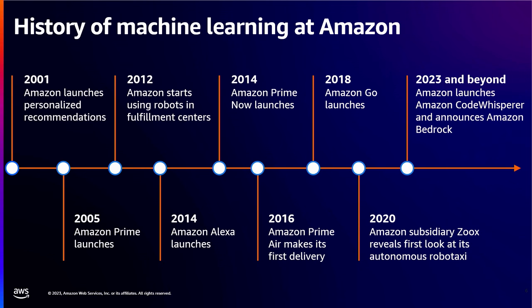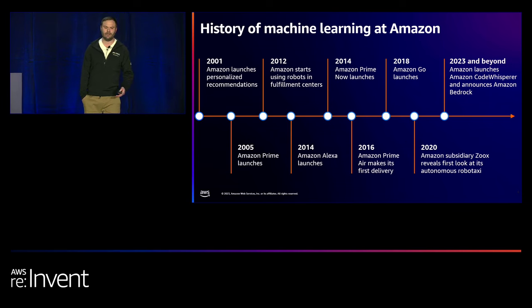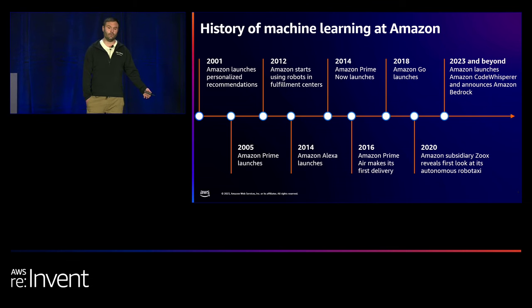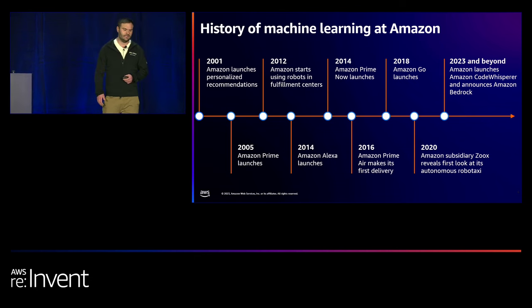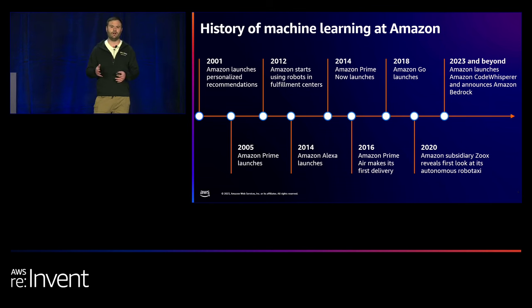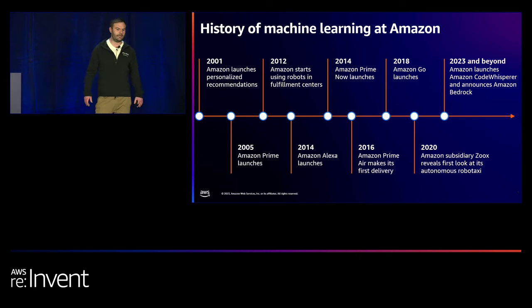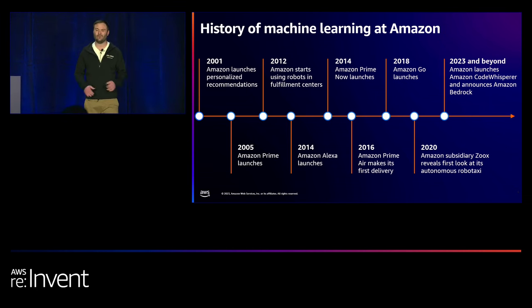AI and ML are not new to Amazon. We have a rich history of over 20 years in that space. It's a big part of what we do — our past, present, and future. Back in 2001, we introduced personalized recommendation engines. We also have Amazon Alexa, fulfillment center robots for route planning, predictive forecasting for inventory, and more recently things like CodeWhisperer and Amazon Bedrock.